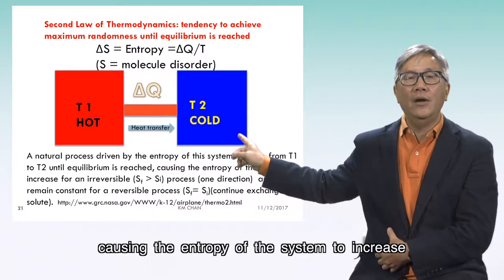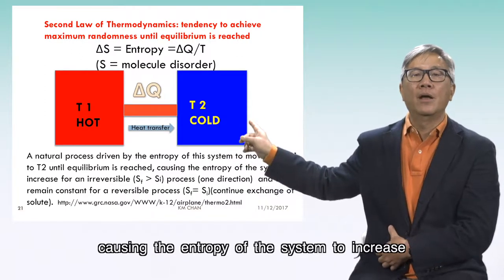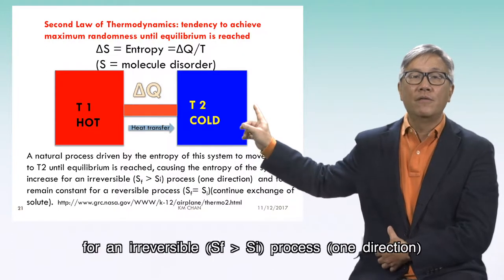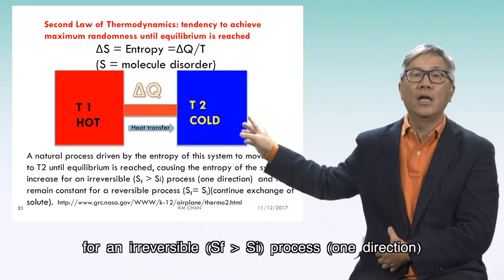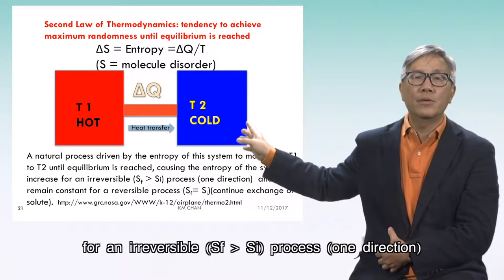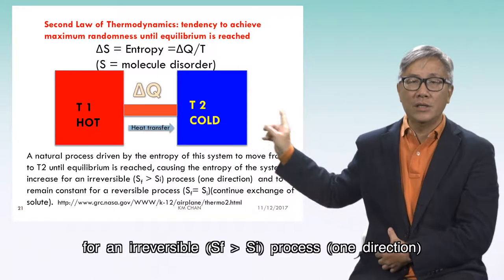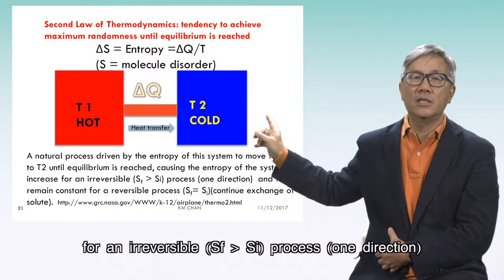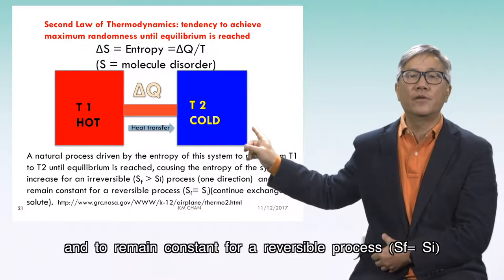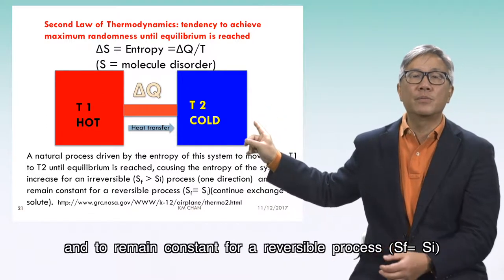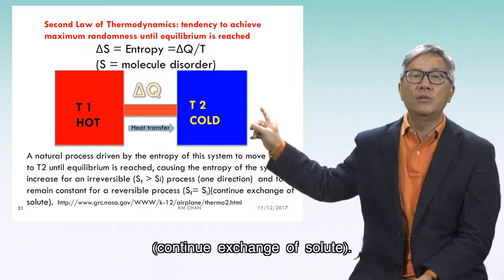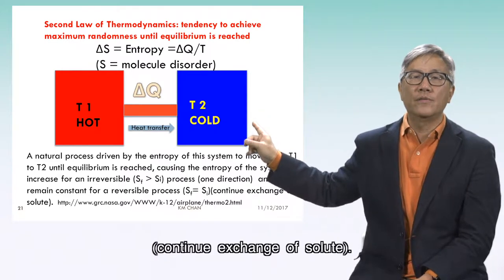This causes the entropy of the system to increase for an irreversible process, or one-direction process, and to remain constant for a reversible process, with continuous exchange of energy.